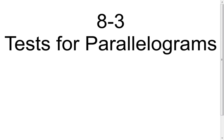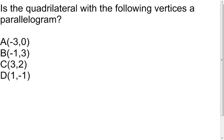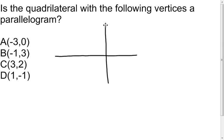Here we're going to look at one example, and I'm going to look at it three different ways using my test for parallelograms. It tells me that I have a quadrilateral, and it gives me the four vertices of it. I want to figure out: is this thing a parallelogram, or is it just a quadrilateral? My recommendation is, let's graph it. You don't have to get out graph paper — you can just make an approximate one right here.